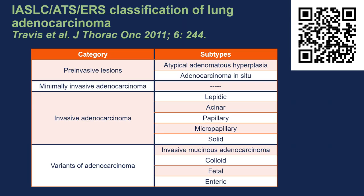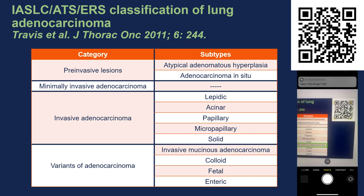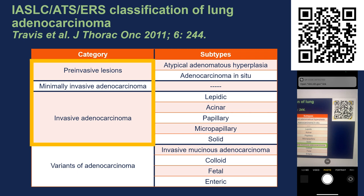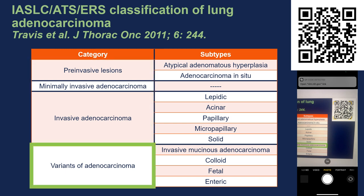There is a classification scheme for adenocarcinomas — there is a QR code in the top right corner of the slide linking directly to the relevant article. This article classifies adenocarcinomas across a spectrum from pre-invasive lesions to minimally invasive to typical invasive adenocarcinomas, describing the de-differentiation pattern. There is also a last category of variants, which are subtypes of invasive adenocarcinoma with unique histologic features — specifically, invasive mucinous adenocarcinoma has unique clinical and radiologic features as well.